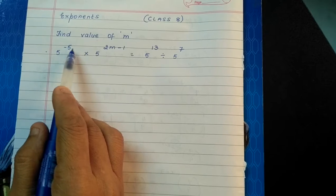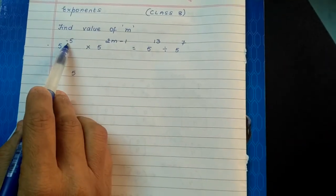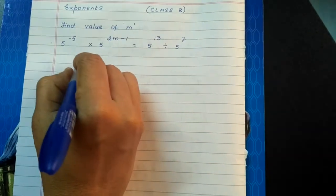This is like a^m × a^n. So φ^(-5 + 2m - 1).